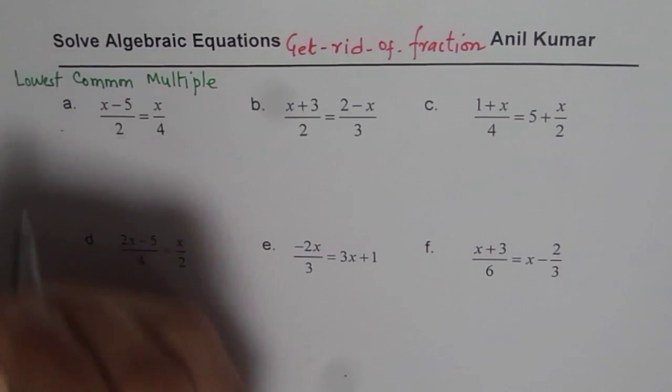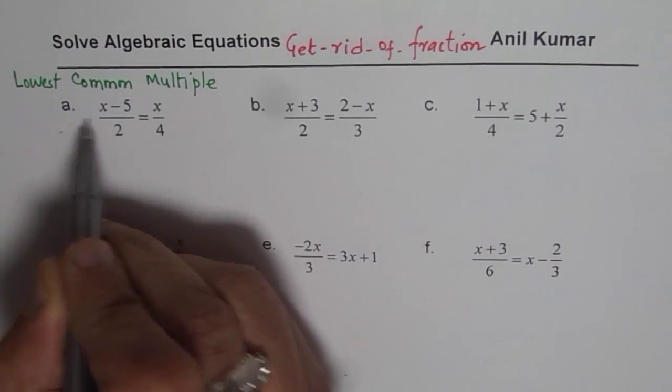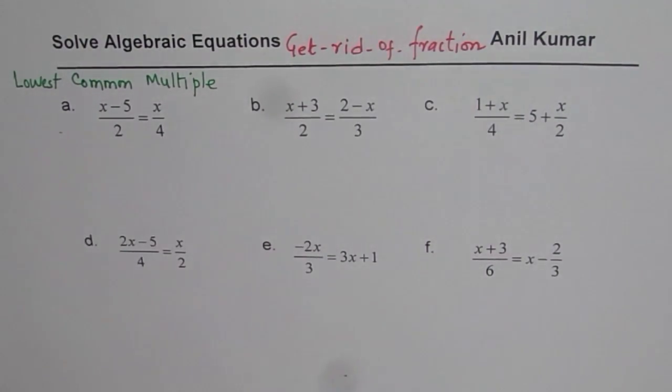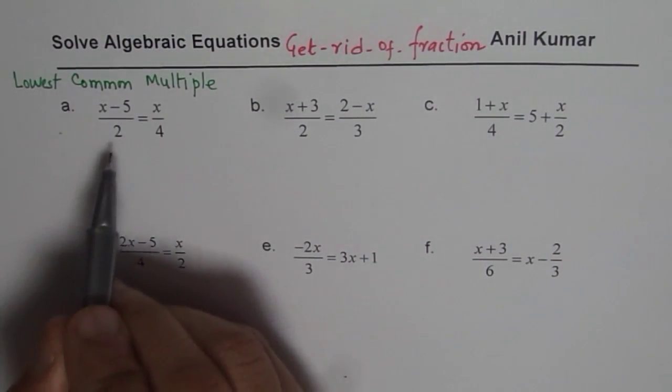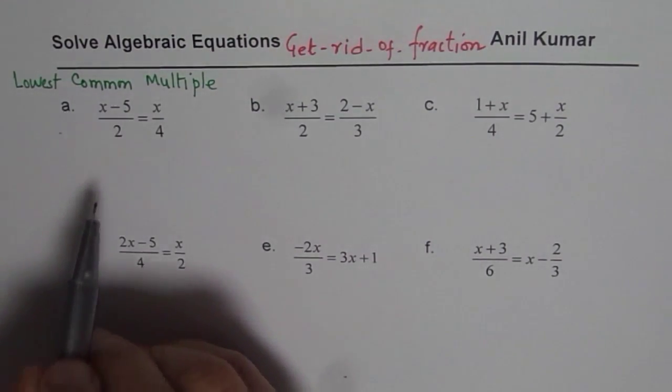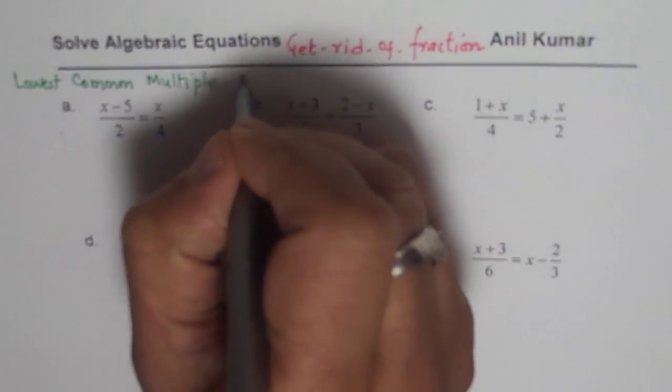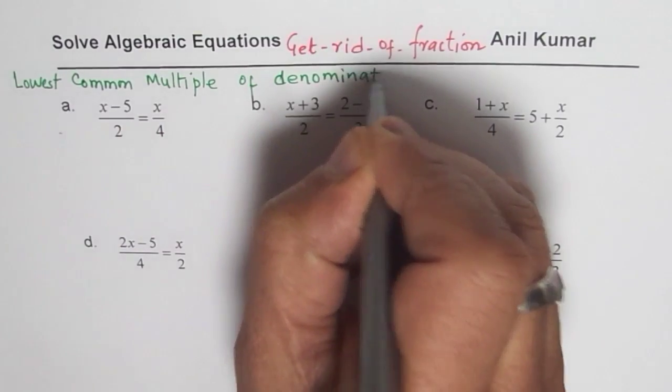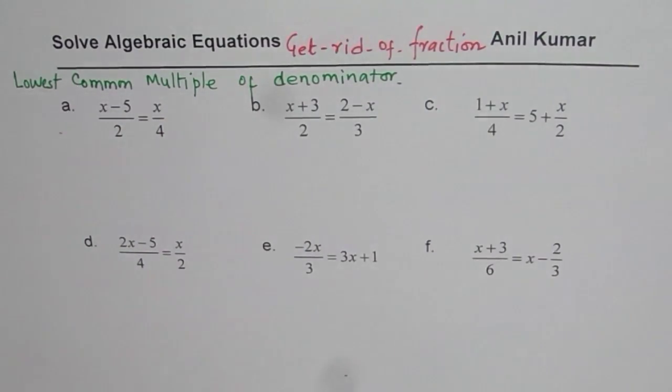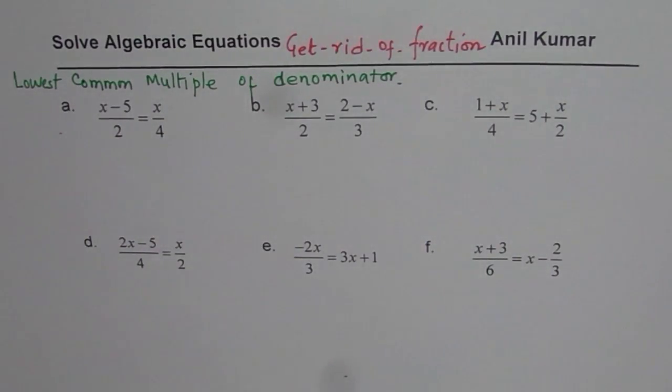To be precise we are looking for the lowest common multiple. So I know if I multiply by 20 or by 100 I can get rid of fraction but then we are going to complicate it since it becomes bigger numbers. So we are looking for lowest common multiple of the denominator.